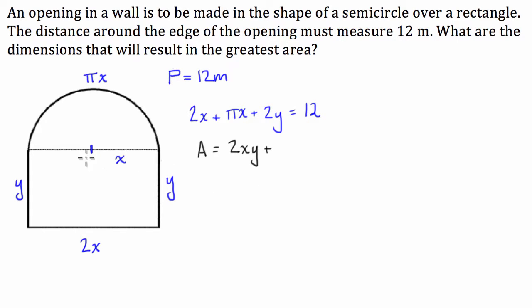And we're going to add that to the area of half a circle. Now, the area of a circle is pi r squared. In this case, the radius is x. So half a circle is going to be pi x squared divided by 2.